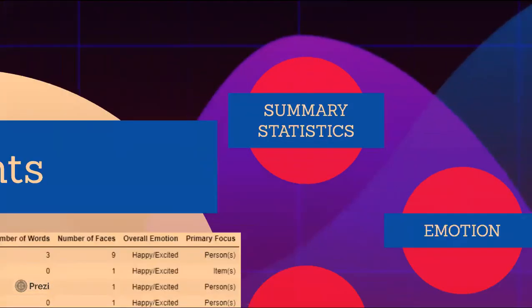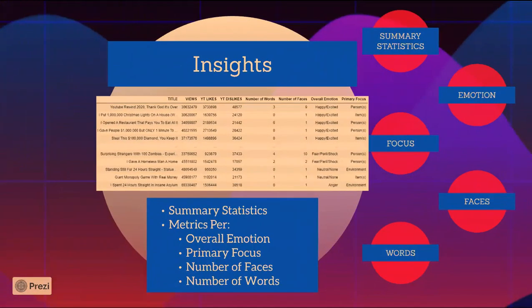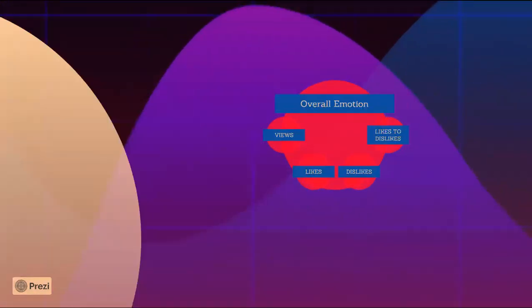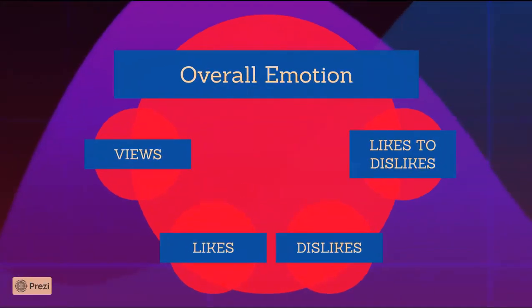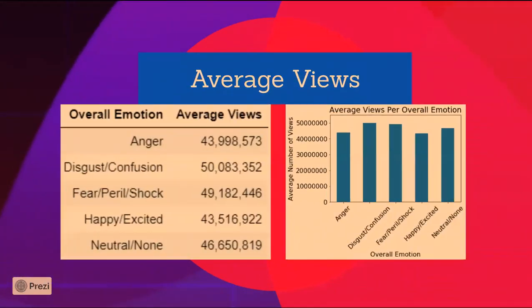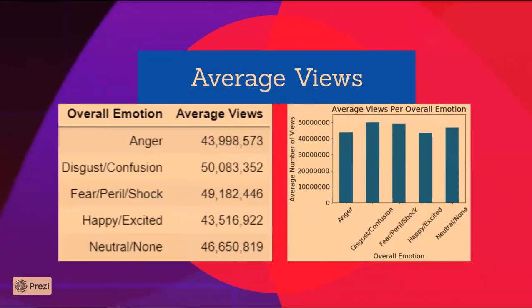Then I plotted video metrics for each emotion. The first plot is average views per overall emotion. You can see that disgust/confusion has the highest average views. So even though happy/excited was the most frequent emotion used in recent thumbnails, it actually had a lower number of average views relative to other emotions.